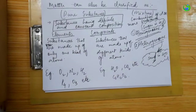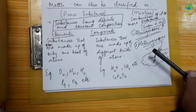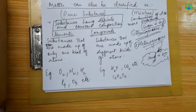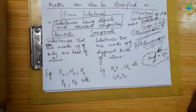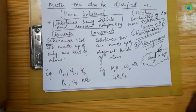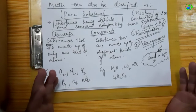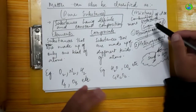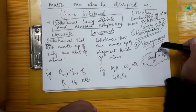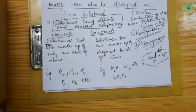Mixtures are of two types: homogeneous mixture and heterogeneous mixture. Homogeneous mixtures are those mixtures in which the composition is the same throughout. The heterogeneous mixture has different composition in different parts. An example of a homogeneous mixture is sugar in water or salt in water. Heterogeneous mixture examples are sand in water and chalk in water.